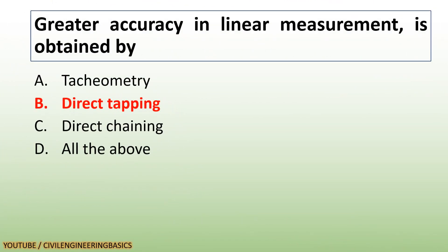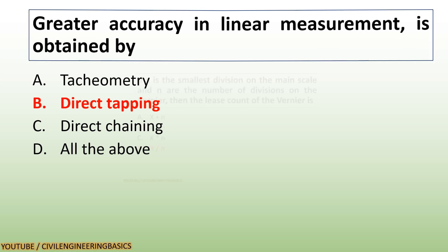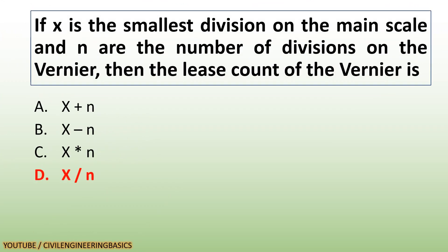Greater accuracy in linear measurement is obtained by direct tapping. The least count of the vernier is given by the smallest division on the main scale divided by the number of divisions on the vernier.